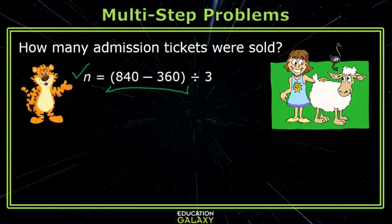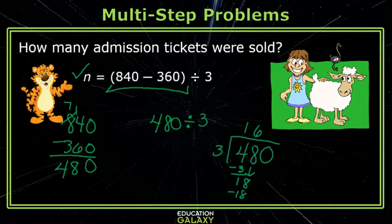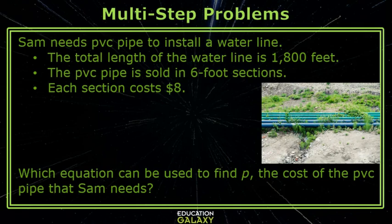We need to do what's in parentheses first. When I subtract, I get $480. So I have 480 divided by 3. When you do this division you get 160. That is my answer — the 4-H Club sold 160 admission tickets.